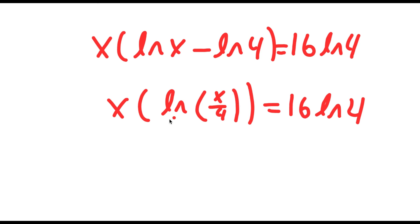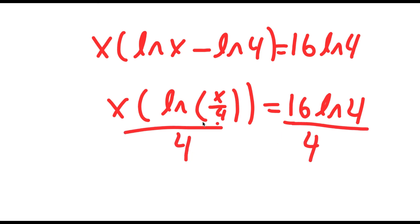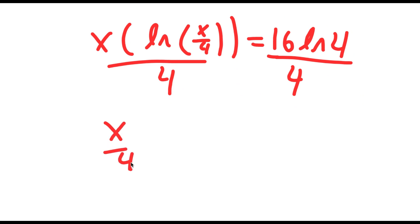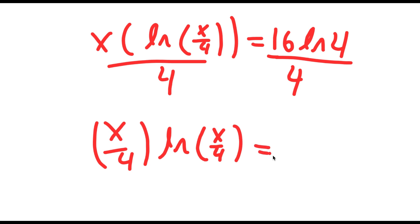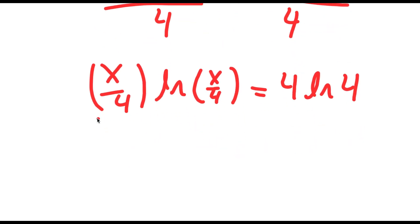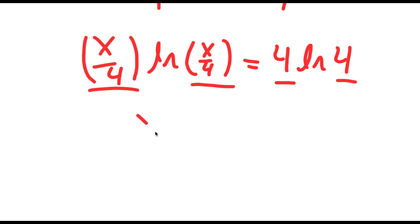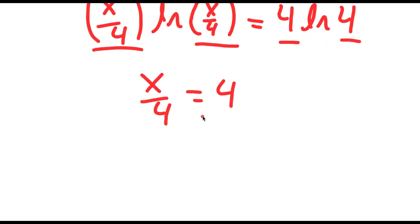Dividing both sides by 4, I get (x over 4) times ln(4) equals 4 times ln(4). I notice both sides are in the form [something] times ln of that same something — so x over 4 equals 4, meaning x equals 16.